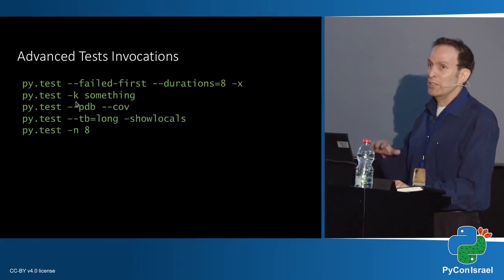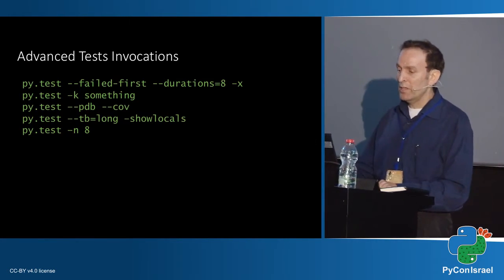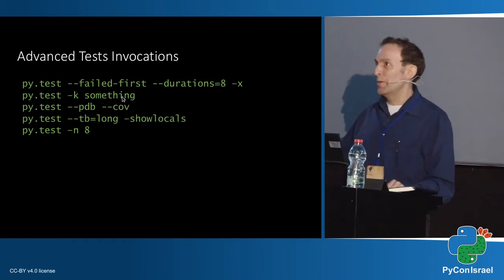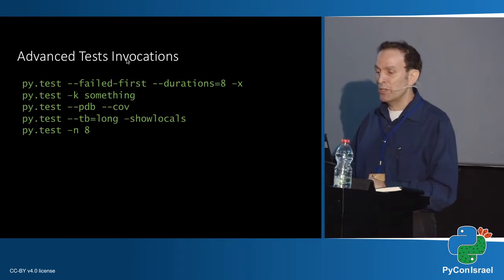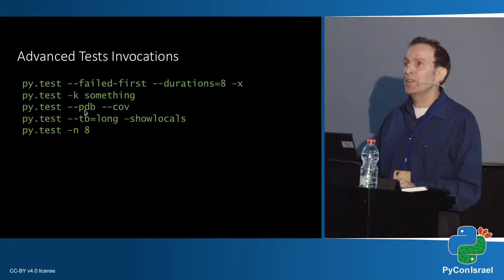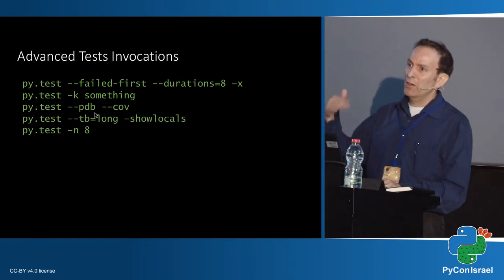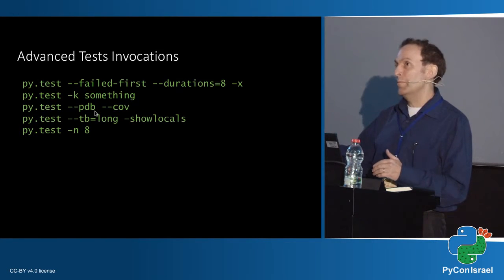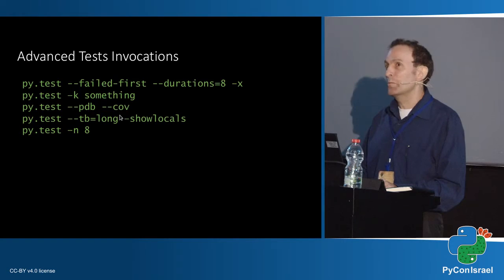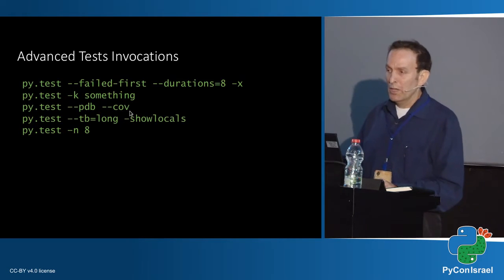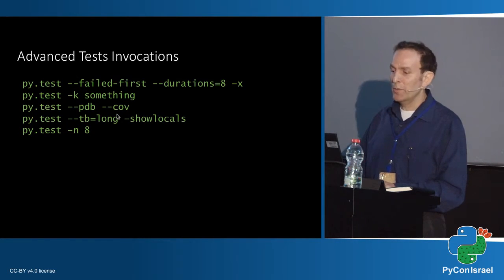The '-k' flag enables us to run just specific tests — we provide a regular expression pattern, so anything matching will be run and anything else will not. For those working with PDB, if we run with the '--pdb' flag and there is an error, it will stop there and put us in the debugger so we can continue debugging from that point. Coverage is a plugin that enables us to measure coverage of our code — we can check how much of our code is tested and how much is not.